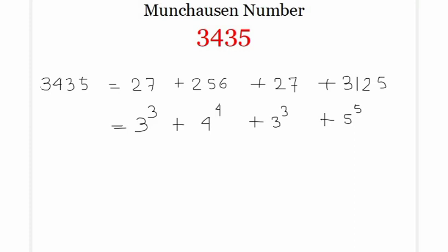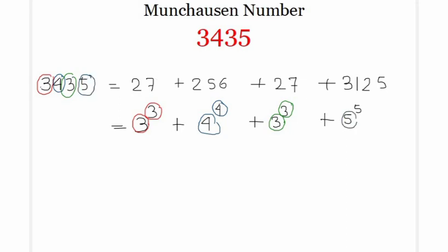Now there is a very interesting thing to notice. Here 3 is the first digit of this number, and the digit 3 appears with the same power. Similarly, 4 is the second digit here, and in the representation we can see 4 to the same power 4. Third, we can see 3 here and in the representation 3 is here to the same power 3. Finally we can see 5 here with the same power 5.